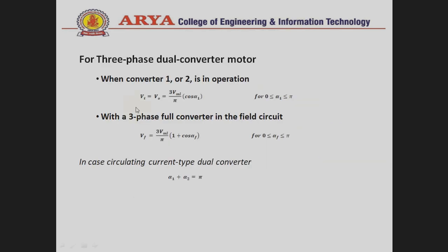The basic formulas for the dual converter model, where converter one and two operate in parallel: for converter one, Vout = (3·VmL / π)·cos(alpha1). For converter two, alpha1 is replaced by alpha2. For the three-phase full converter in the field circuit, Vf = (3·Vm / π)·(1 + cos(alpha_f)). In the circulating-current type dual converter, alpha1 + alpha2 must equal π (180 degrees).